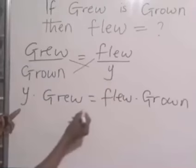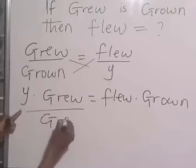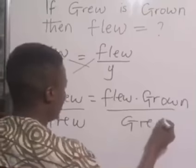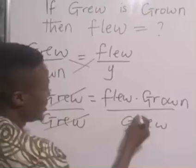So, to get your y, divide both sides by grew. Divide both sides by grew, so that grew will cancel grew.